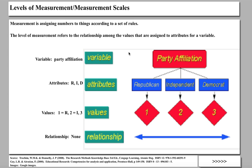Before we do that, let's take a look at the big picture. The level of measurement, or the scale of measurement, refers to the relationship among values that are assigned to attributes for a variable. Looking at this diagram: the level of measurement refers to the relationship among the values that are assigned to the attributes of the variable under investigation.